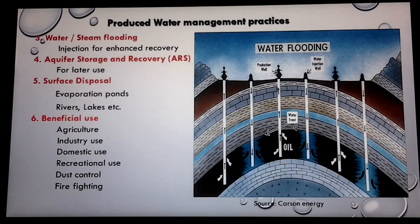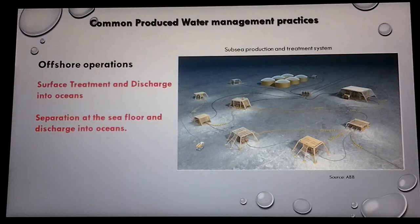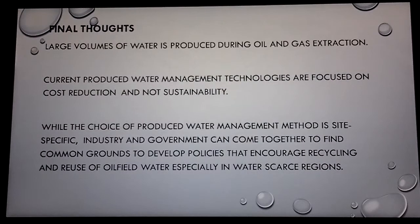Sometimes produced water is also treated and disposed into rivers. In water-stressed areas, it can be used for agriculture, industry, and other purposes. In offshore operations, in general, produced water is treated on the seabed and the water is injected into the ocean.